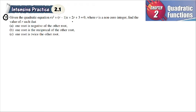Given the quadratic equation where r is a non-zero integer, find the value of r such that one root is negative of the other root. For example, if one root is alpha, then the other root is negative alpha.